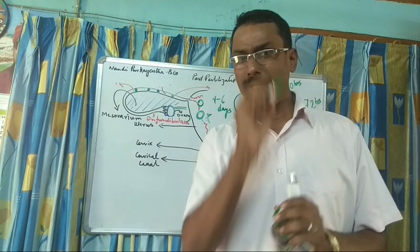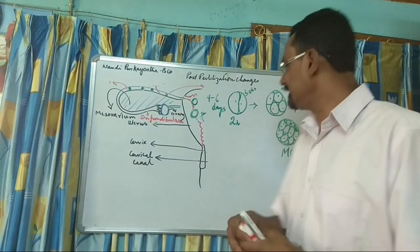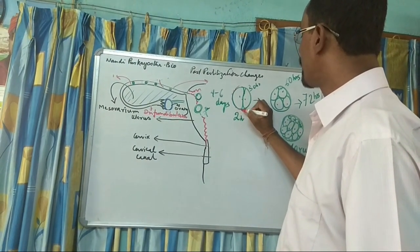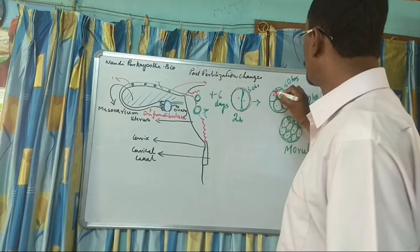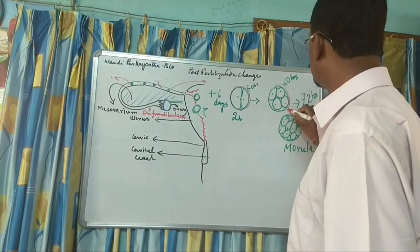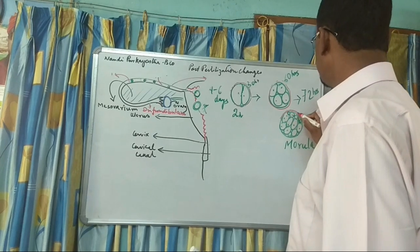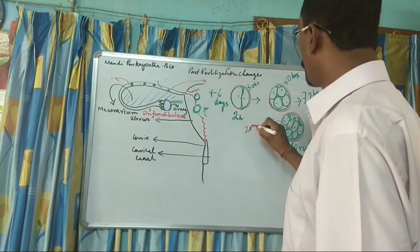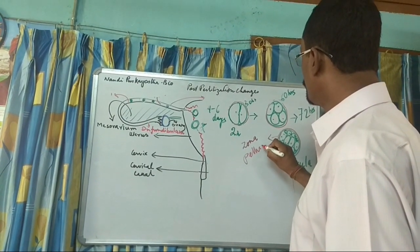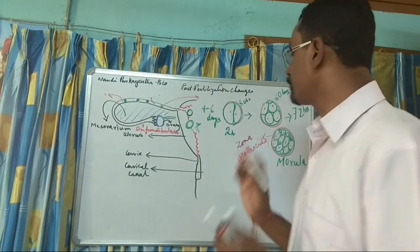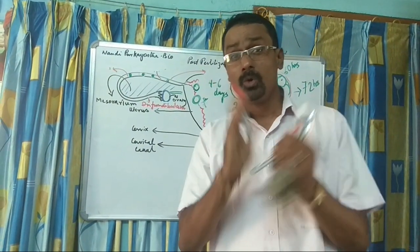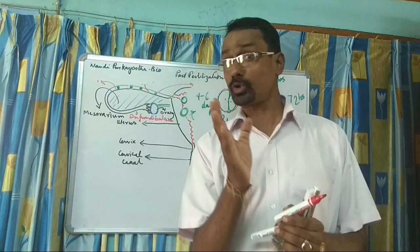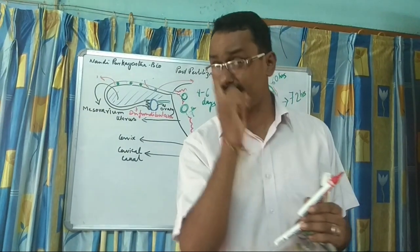One important thing: when discussing the zygote, there is always a layer remaining around it called Zona Pellucida — Z-O-N-A P-E-L-L-U-C-I-D-A. Its function is to prevent the blastomeres from sticking or getting cemented to an unwanted position. That is its most important function.